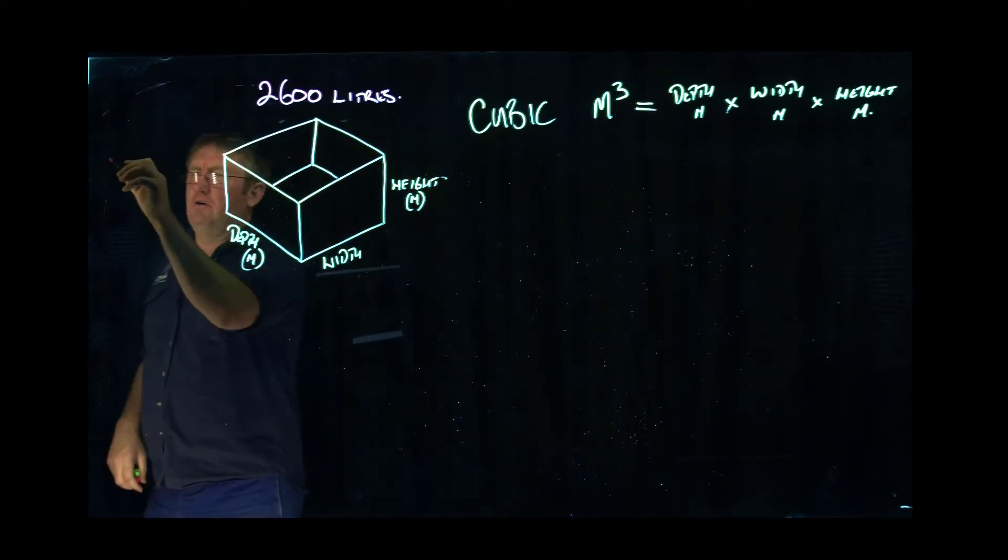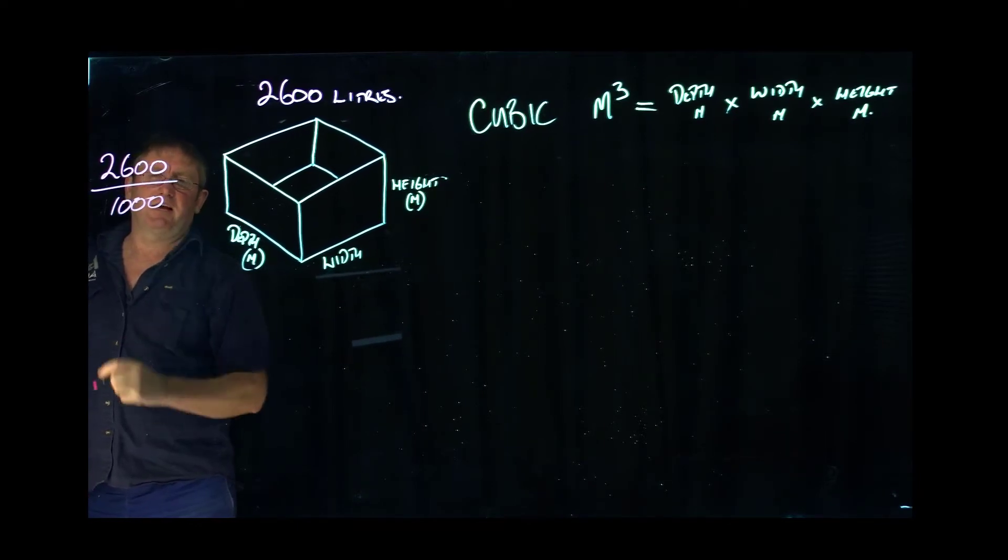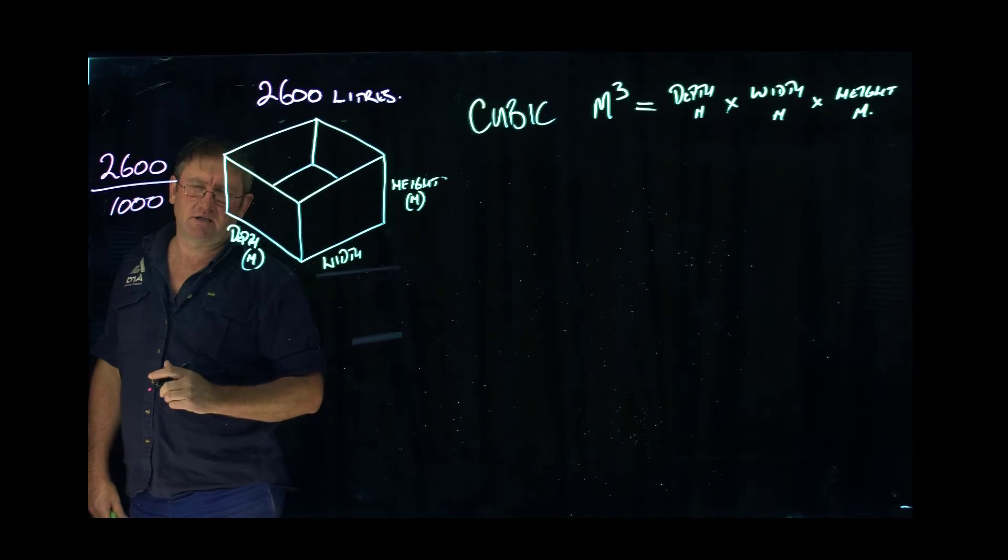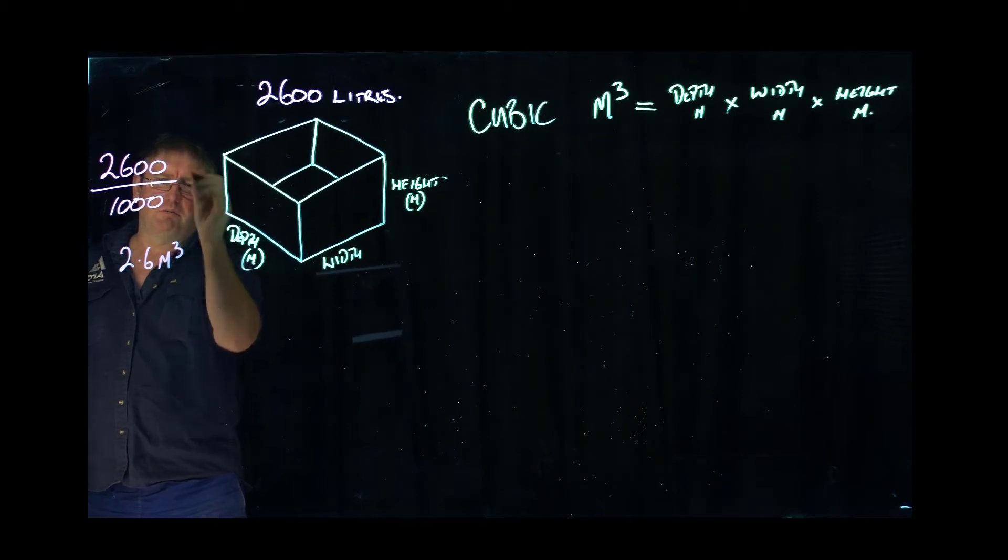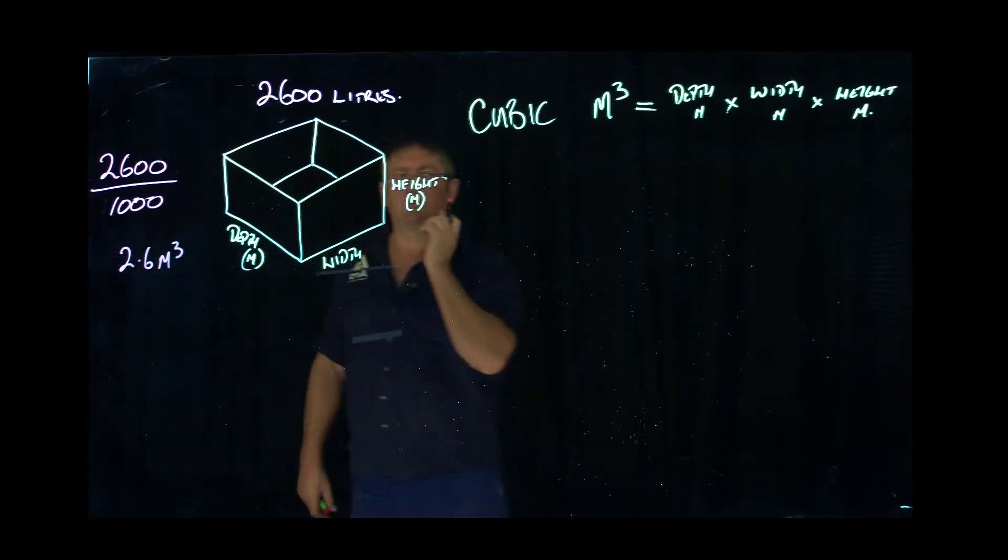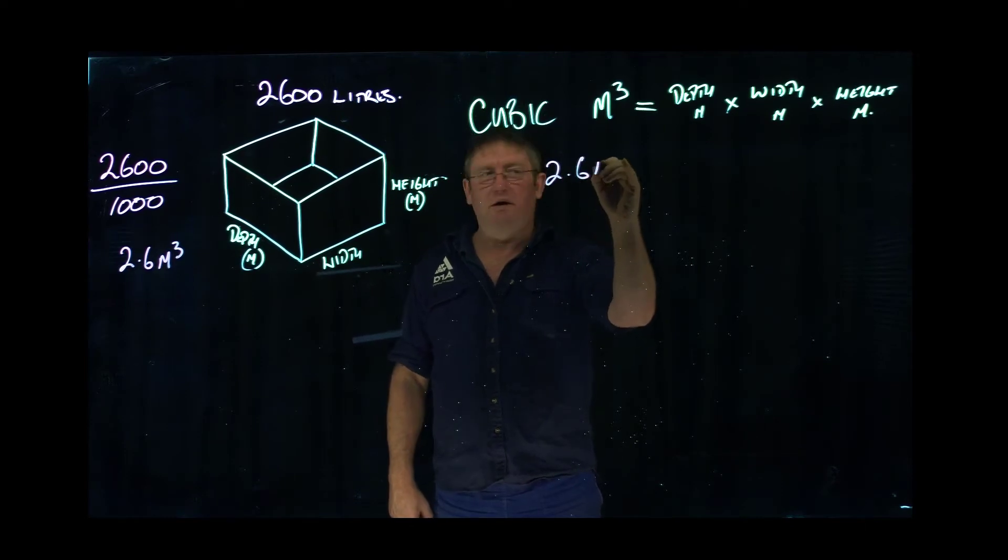What we do: 2,600 divided by 1,000, because there's 1,000 litres in a cubic metre. That gives us 2.6 metres cubed. If you put that through the calculator, that's what you need to do. So over here we have 2.6 metres cubed.